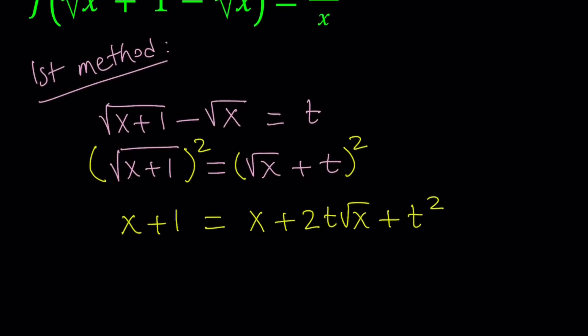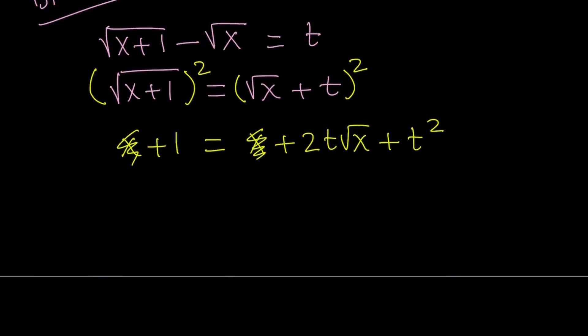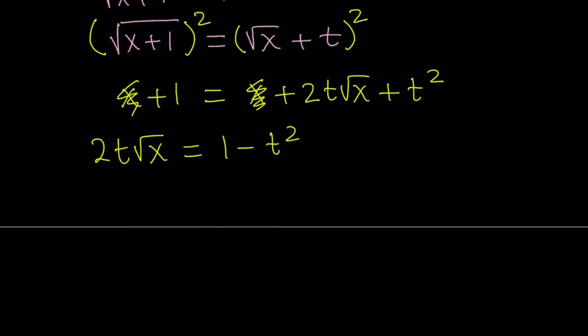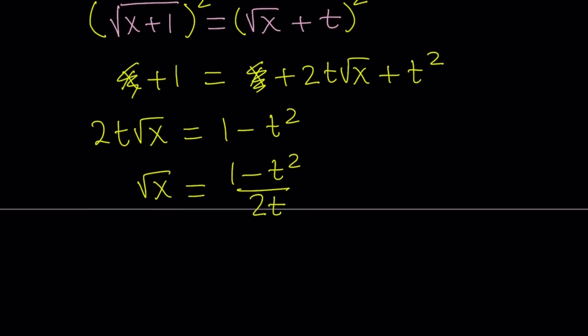Notice that x cancels out on both sides. Our goal is to solve for x. So let's isolate 2t times square root of x by subtracting t squared. Now, to solve for x, divide both sides by 2t, giving us the square root of x. Since we want x itself, let's square both sides.